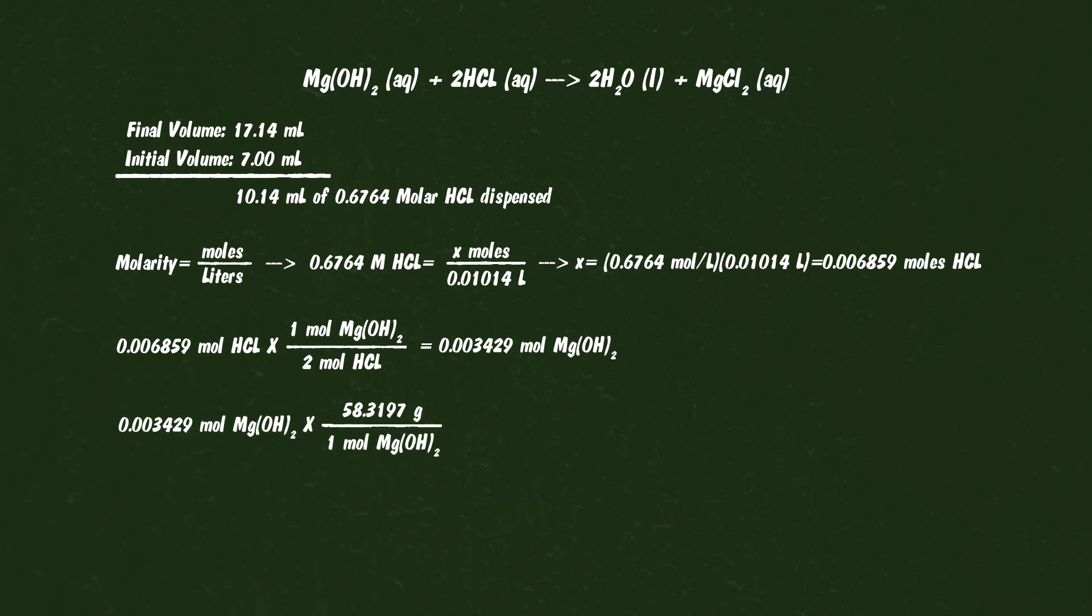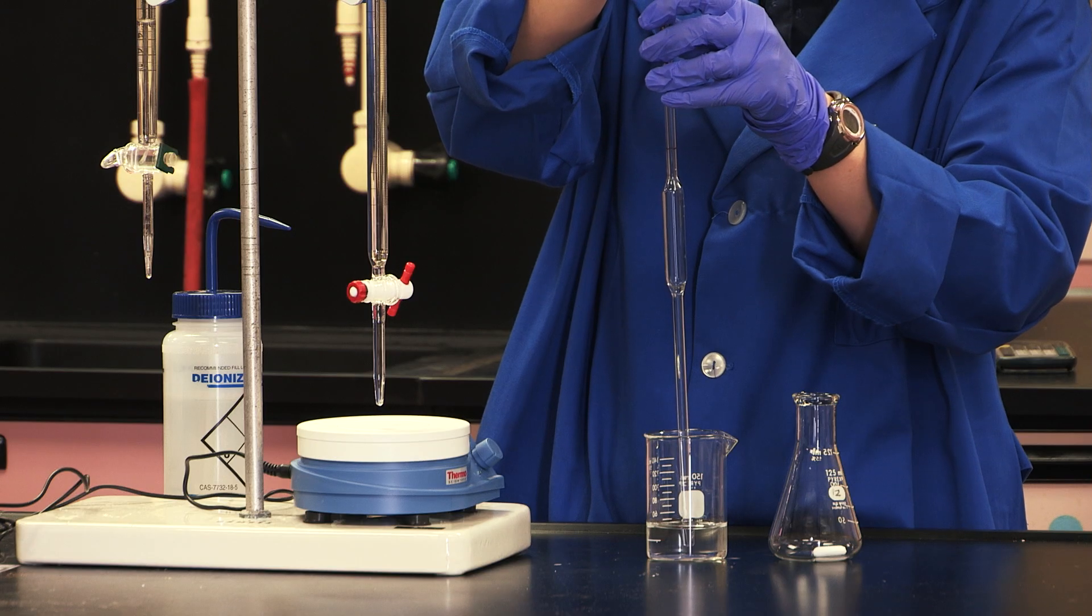We can see that the milk of magnesia contains about 200 milligrams per 5 milliliters, or for a 30 milliliter dose, 1,200 milligrams per dose. The technique isn't challenging to execute.